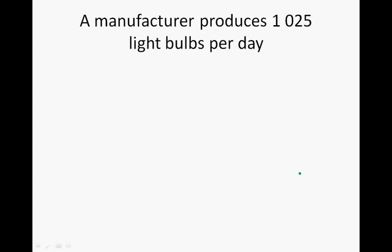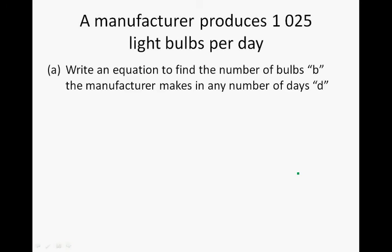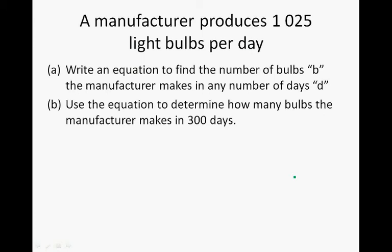Tables and graphs into equations continued. Now the question the teacher ended with was: a manufacturer produces 1,025 light bulbs per day. The first part of the question was, write an equation to find the number of bulbs B the manufacturer makes in any number of days D. And the second part of the question was, use the equation to determine how many bulbs the manufacturer makes in 300 days.